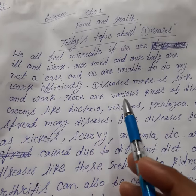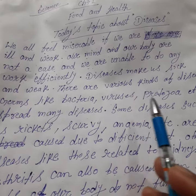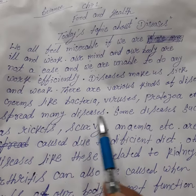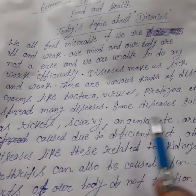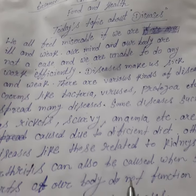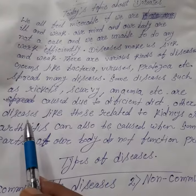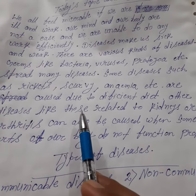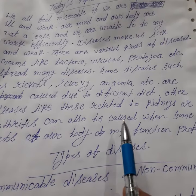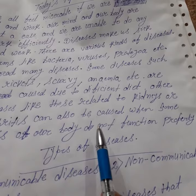There are various kinds of diseases. Germs like bacteria, viruses, protozoa, etc. spread many diseases. Some diseases such as rickets, scurvy, anemia, etc. are caused due to a deficient diet. Other diseases like those related to kidneys or arthritis can also be caused when some parts of our body do not function properly.